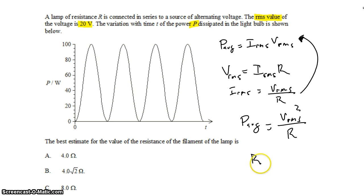R is what I want to know. So that's VRMS squared divided by the average power. The average alternates evenly between 0 and 100 watts, so that's going to be 50. 20 squared is 400, divided by 50 is 8.